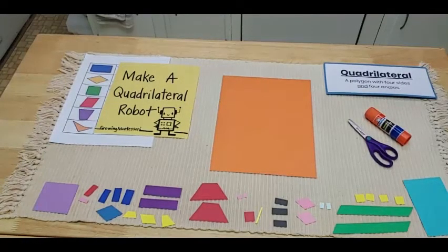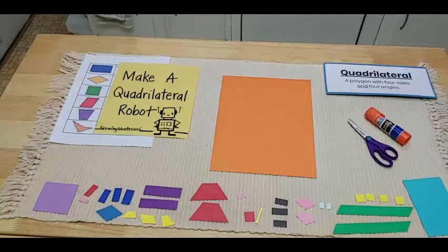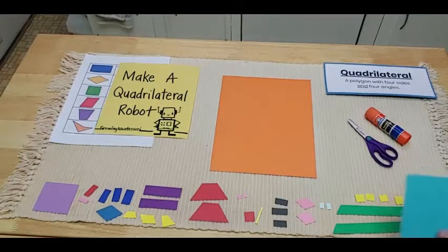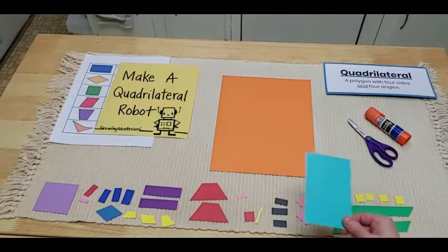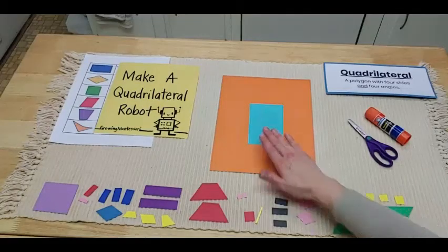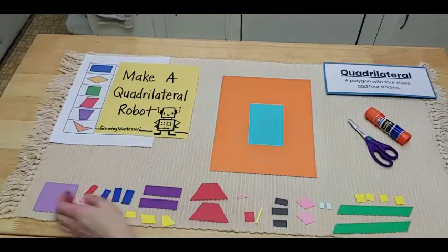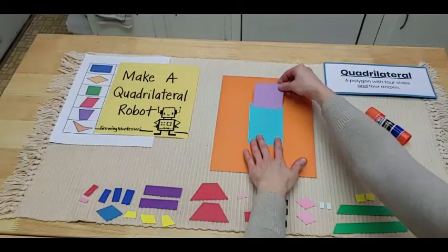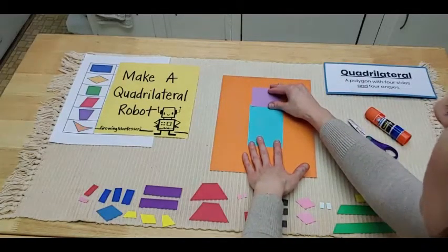What you want to do is you'll want to create the body. And the body is the biggest part. I chose for mine a rectangle in my favorite color. Next, I cut out another shape, a square. And that is going to be the head of my robot.